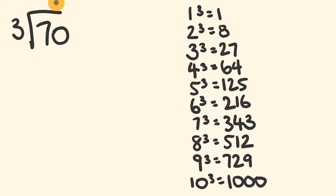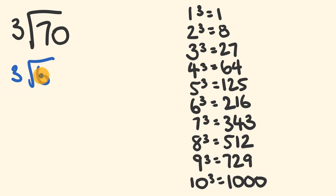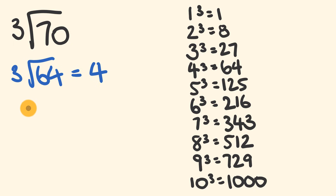We're looking for the cube root of 70. There are three steps to this trick. Step one: find which perfect cube is closest to 70. The perfect cube closest to 70 is 64, and the cube root of 64 is equal to 4. We'll use this 4 for the first part and the third part of our answer. Step two: look at the difference between 70 and 64 — 70 is 6 more than 64.